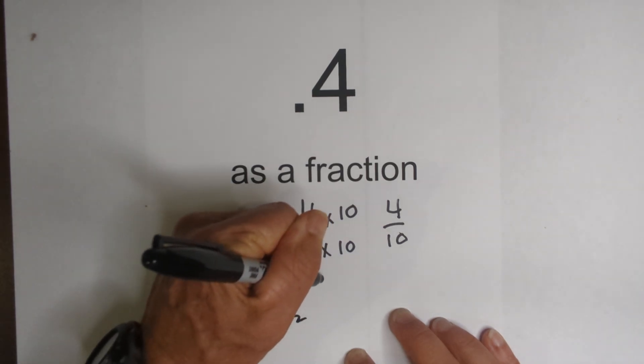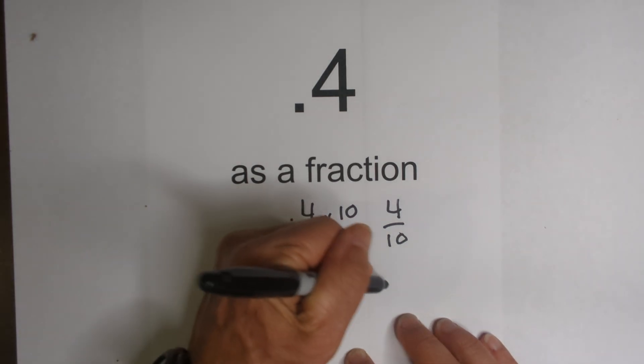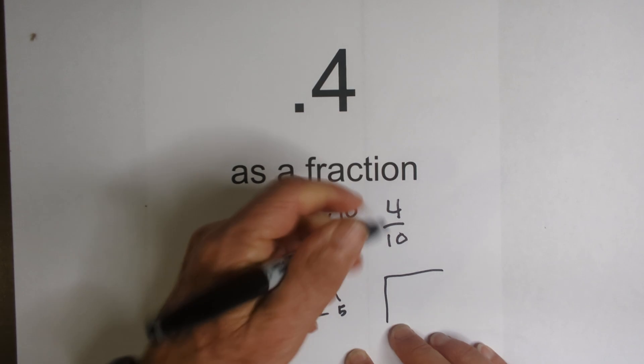2 times 2 is 4, and for 10, 2 times 5 is 10. Place them in this chart.